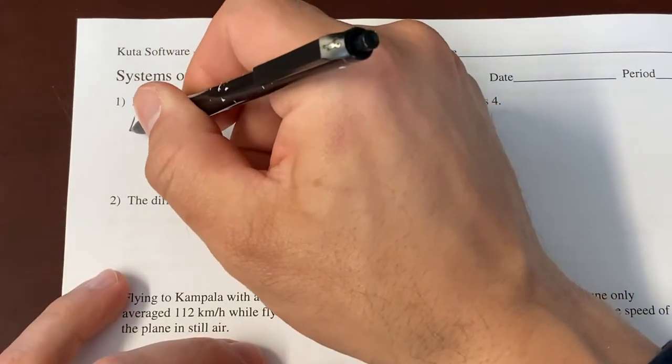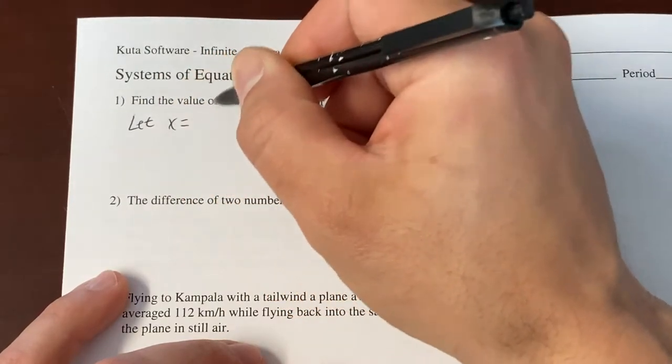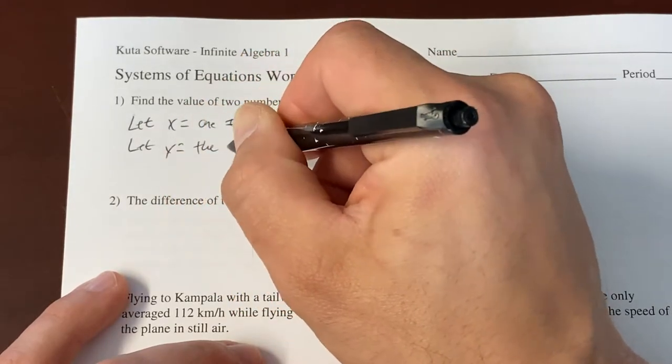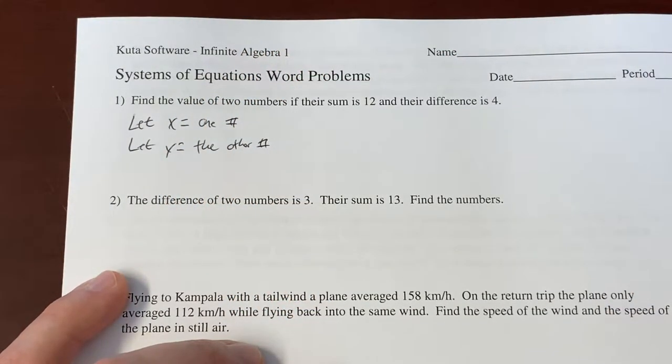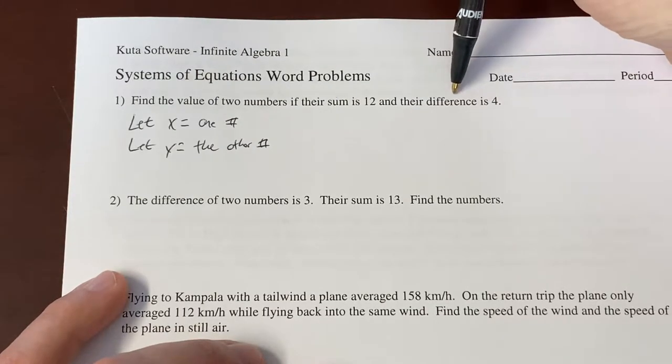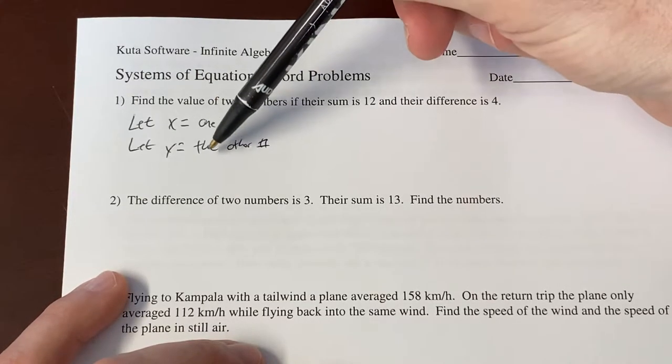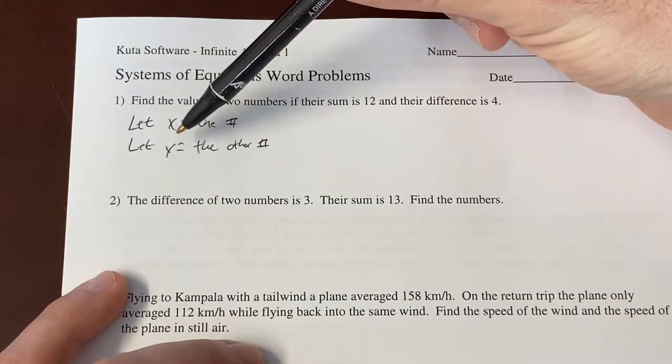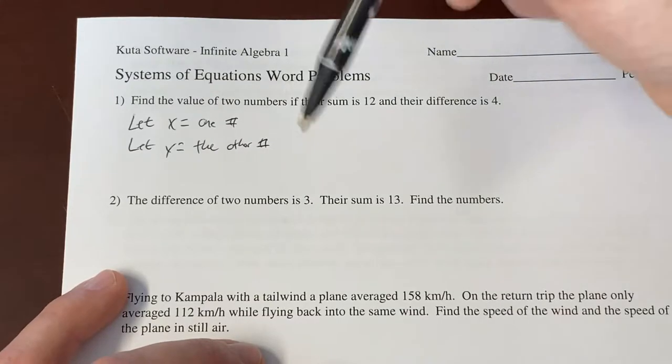For our let statement here, we're just going to say let x equal one number, and we're going to say let y equal the other number, because they didn't give us anything distinguishing these two numbers. They just said, we have two numbers, and we have to find them. For the system we need to write, they've told us the sum, and they've told us their difference. Now, one thing you could do over here is distinguish which number is larger and which number is smaller. You don't have to do that. That'll shake out in the end.